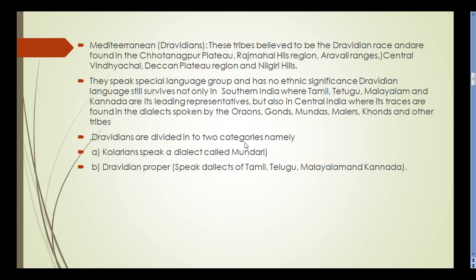Dravidians are divided into two categories: the Kolarians, who speak a dialect called Mundari, and the Dravidian proper, who speak dialects of Tamil, Telugu, Malayalam, and Kannada.